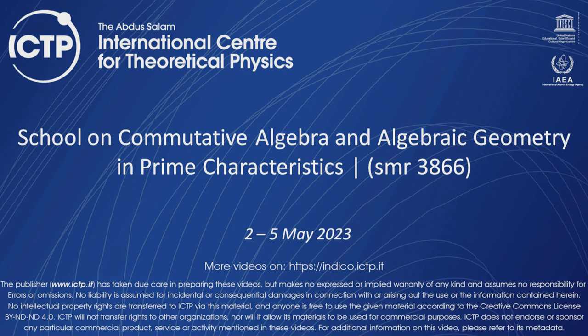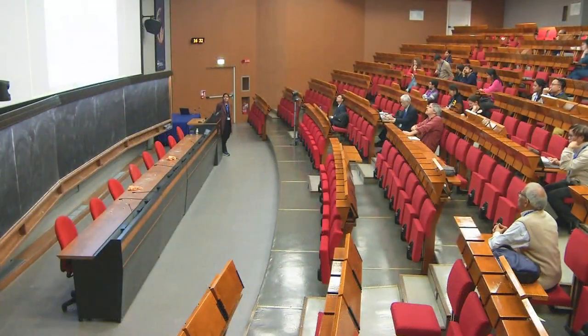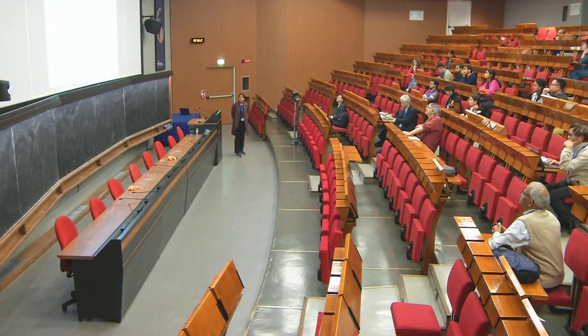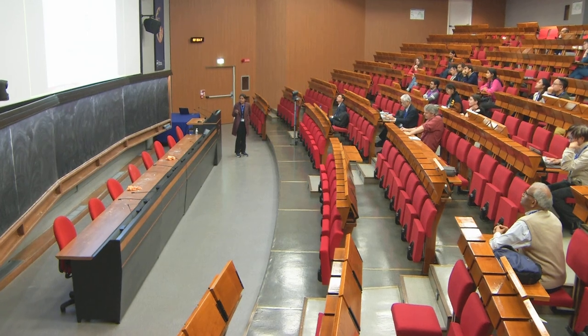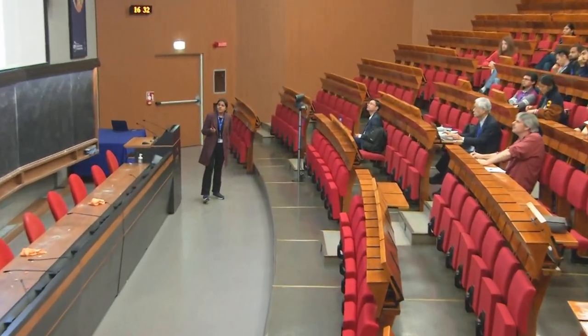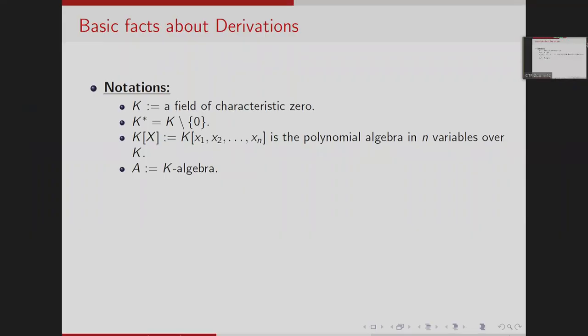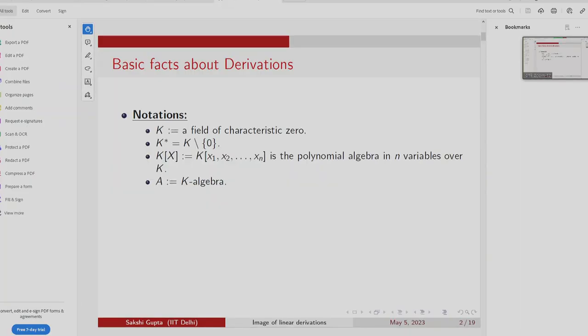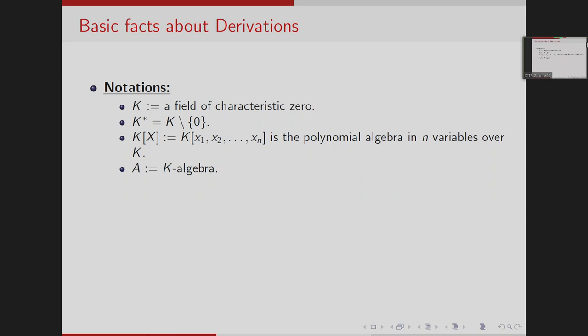Thank you for giving me an opportunity to present my research work. My research topic is the image of linear derivations and Mathieu-Zhao subspaces. For notation: k is a field of characteristic zero, k-star is all the non-zero elements in k, and k[x] is the polynomial algebra in n variables over k. I have defined A to be a k-algebra.